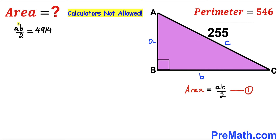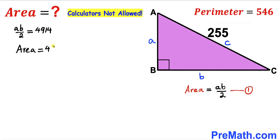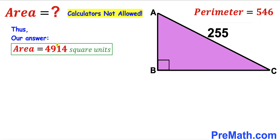Since ab/2 is simply the area of the given triangle, the area turns out to be 4914 square units.